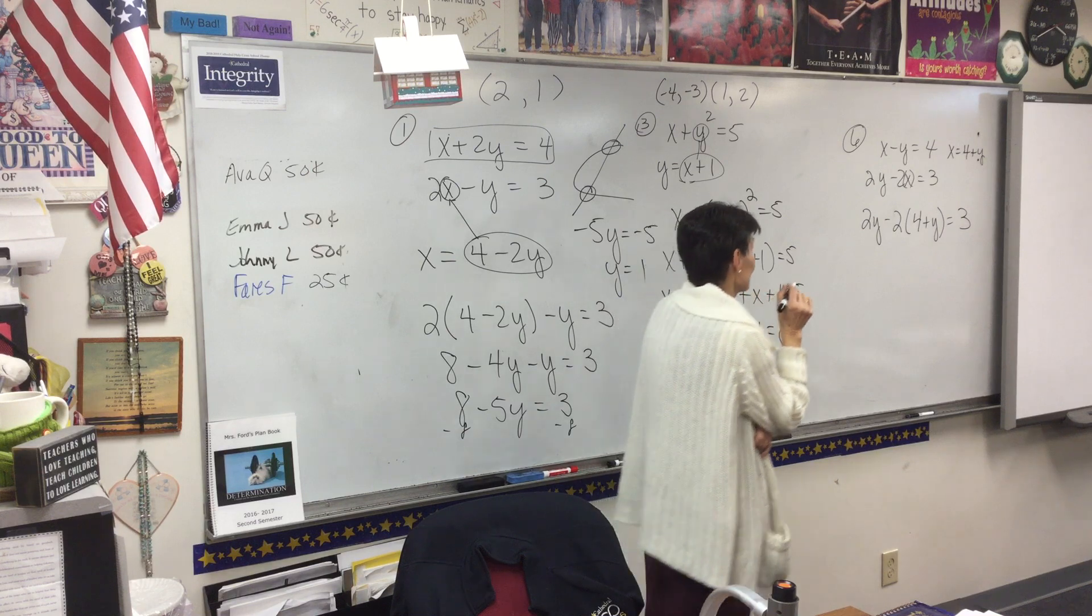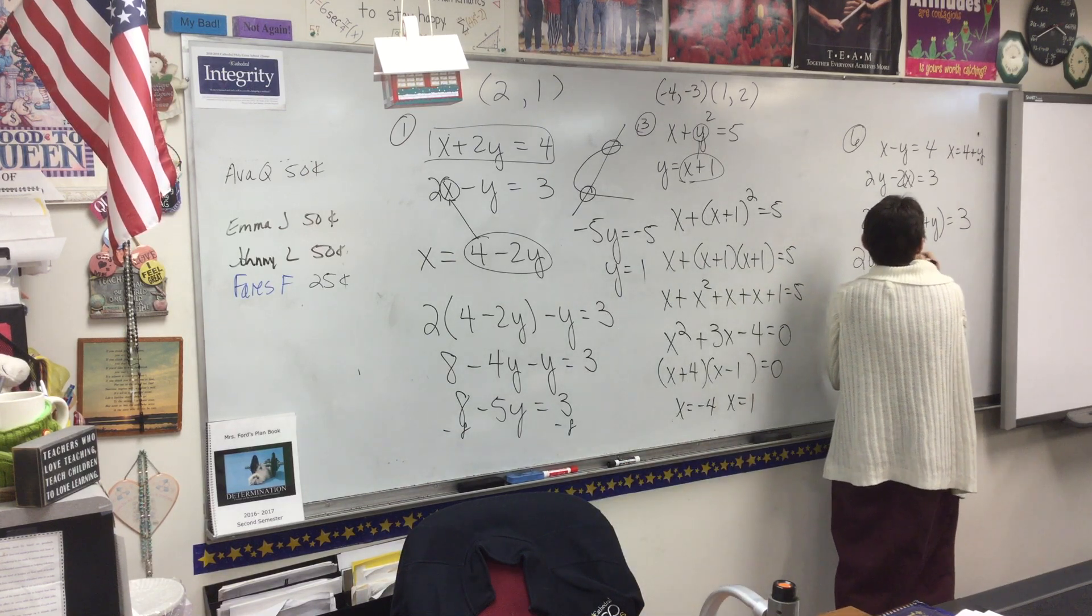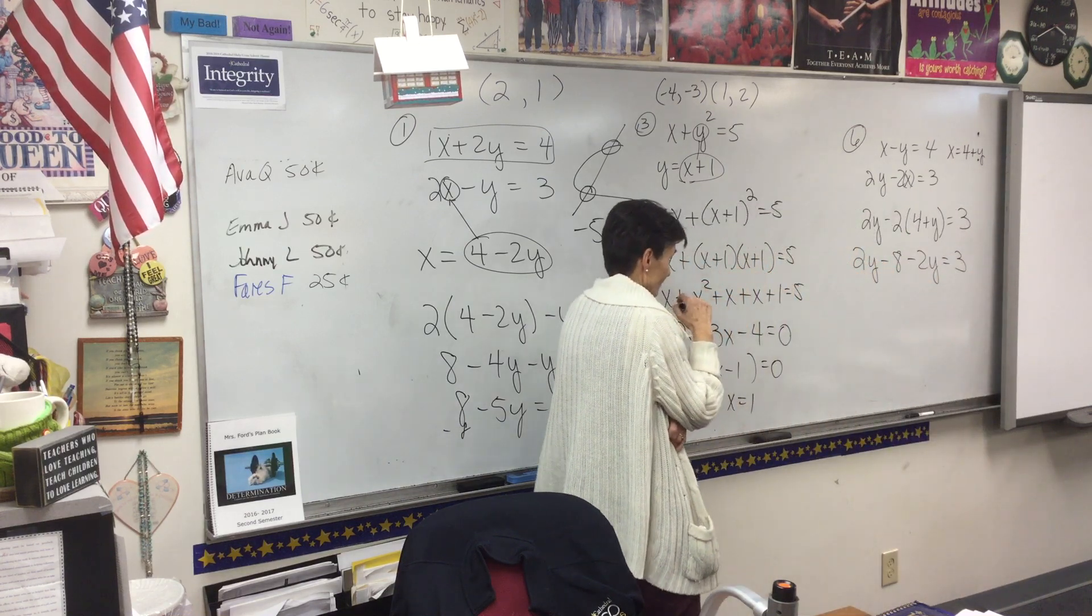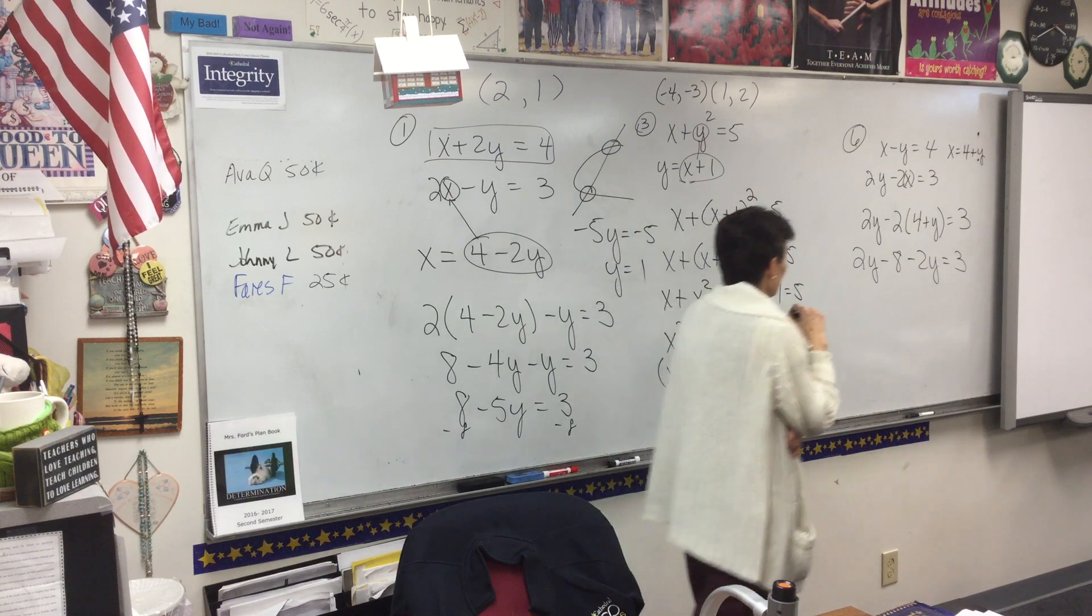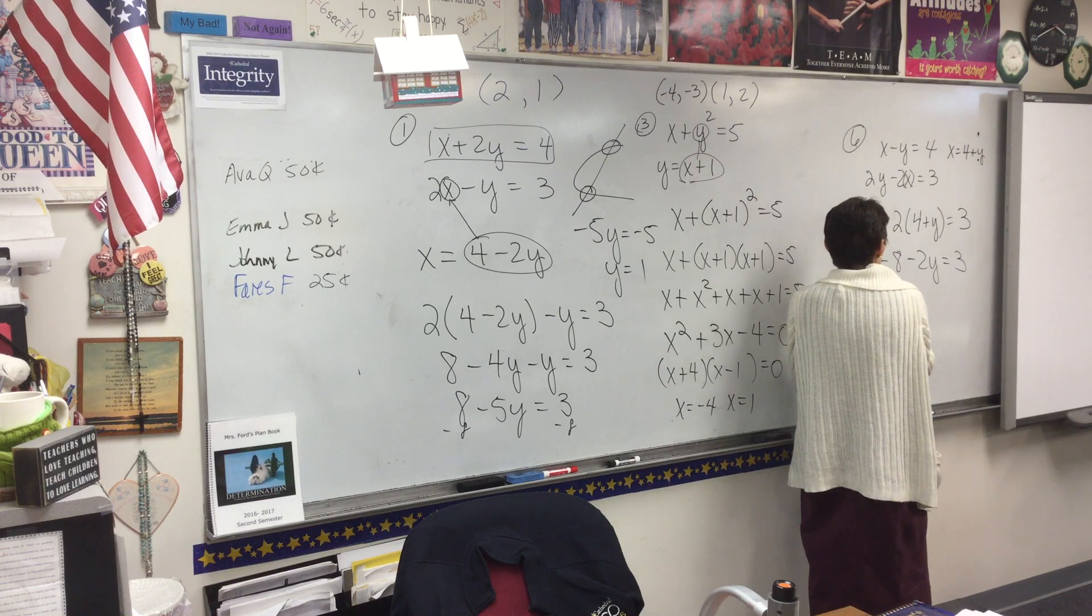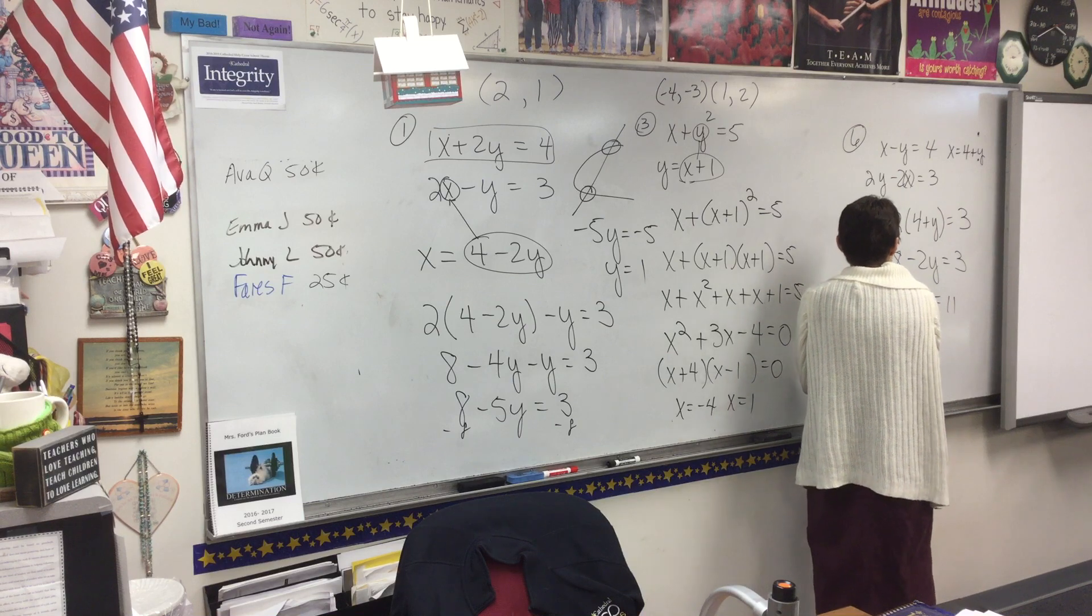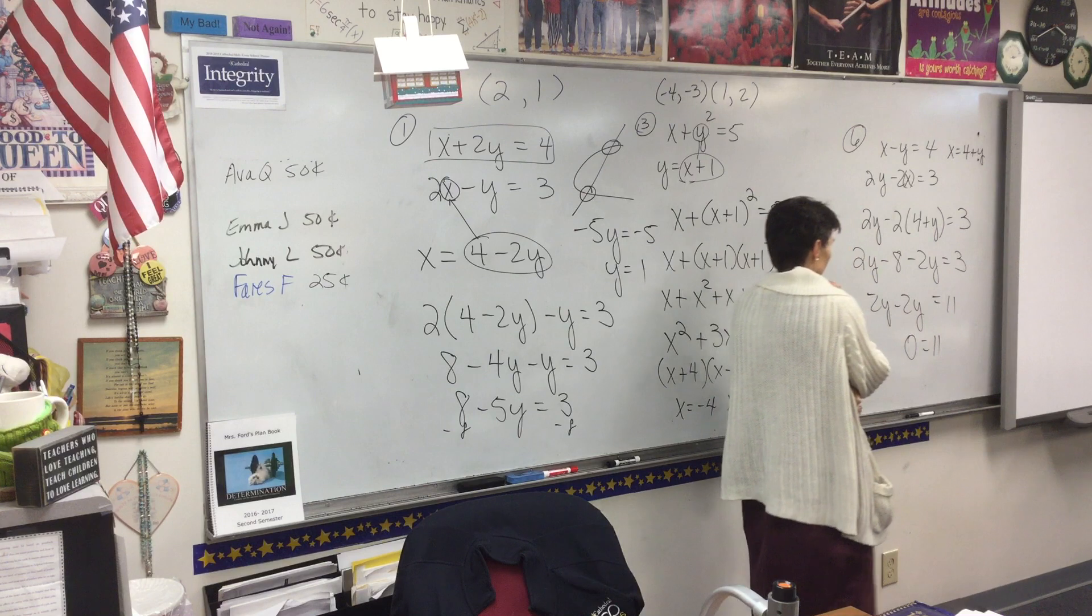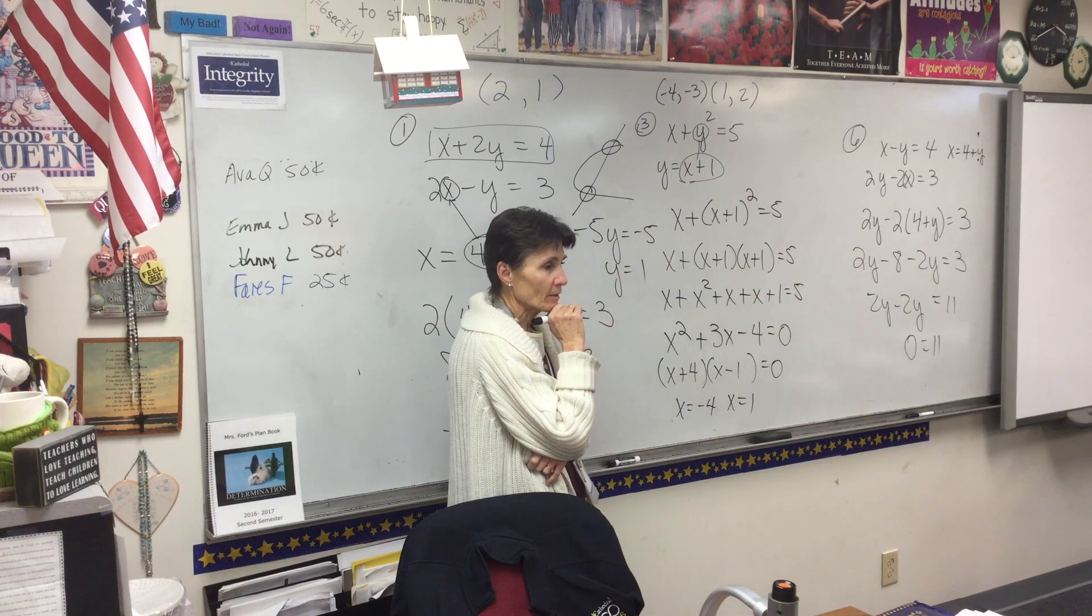Don't feel bad. 7's a lucky number. So 2y minus 8 minus 2y equals 3. Add the 8 over. I can add the 8 over, and that's going to be 11. But over here, I'm going to have 0, aren't I? Wait a minute. What's going on here?